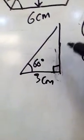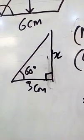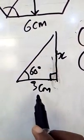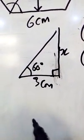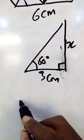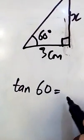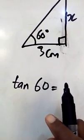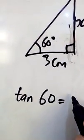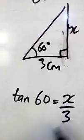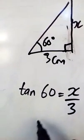Now the next thing I'm going to do is to find the size of x. So opposite over adjacent will give me tan 60. So tan 60 is equal to the opposite over the adjacent.